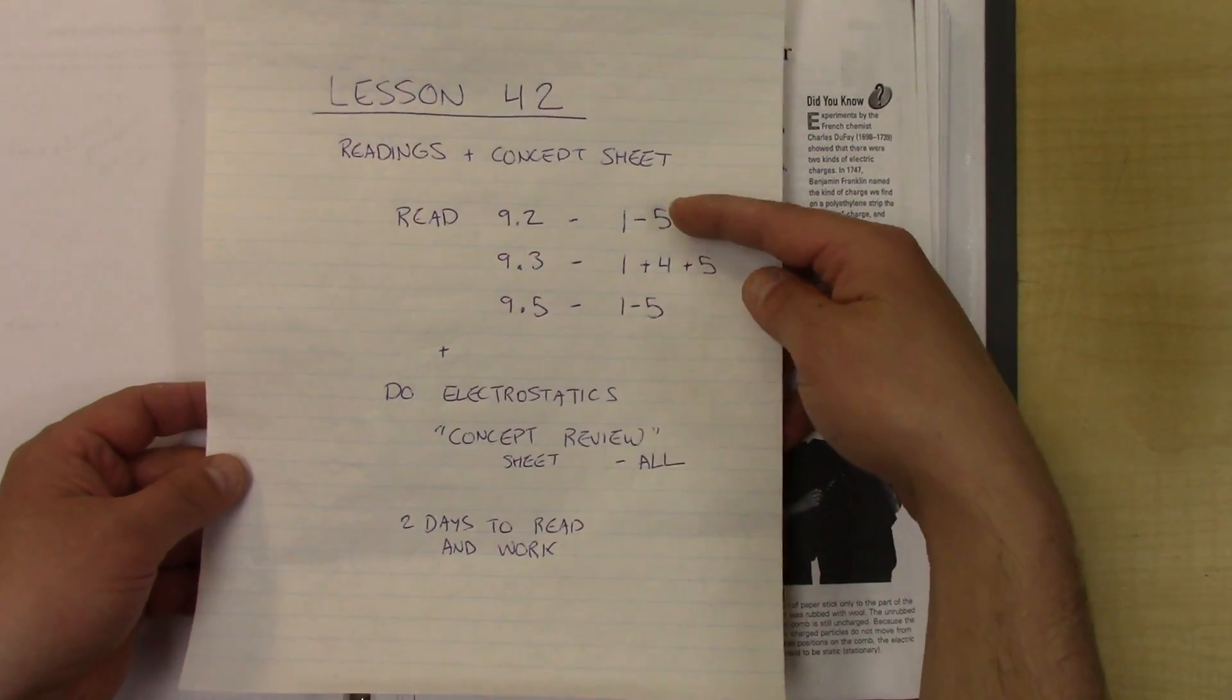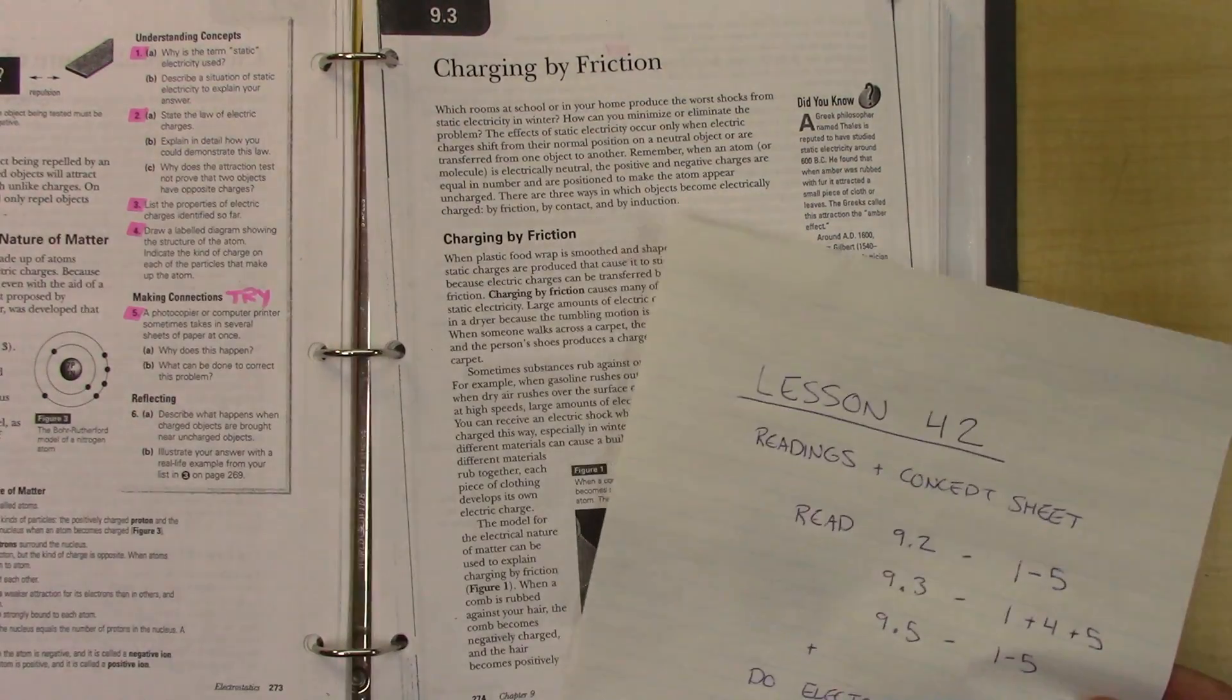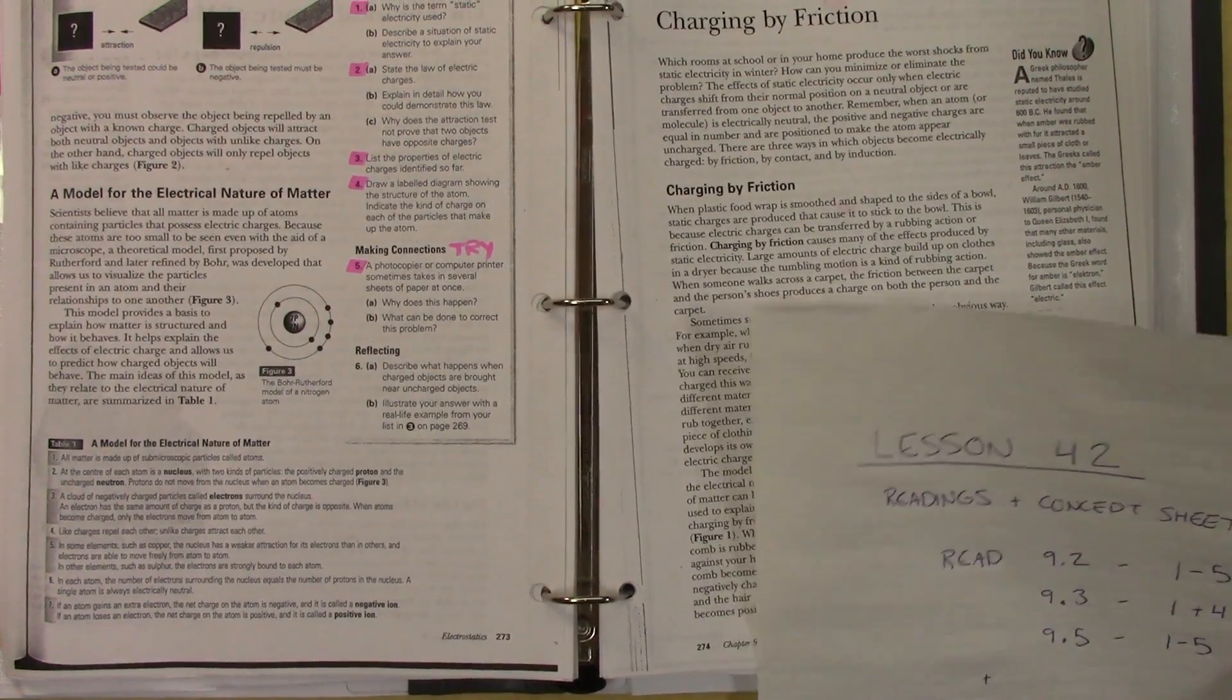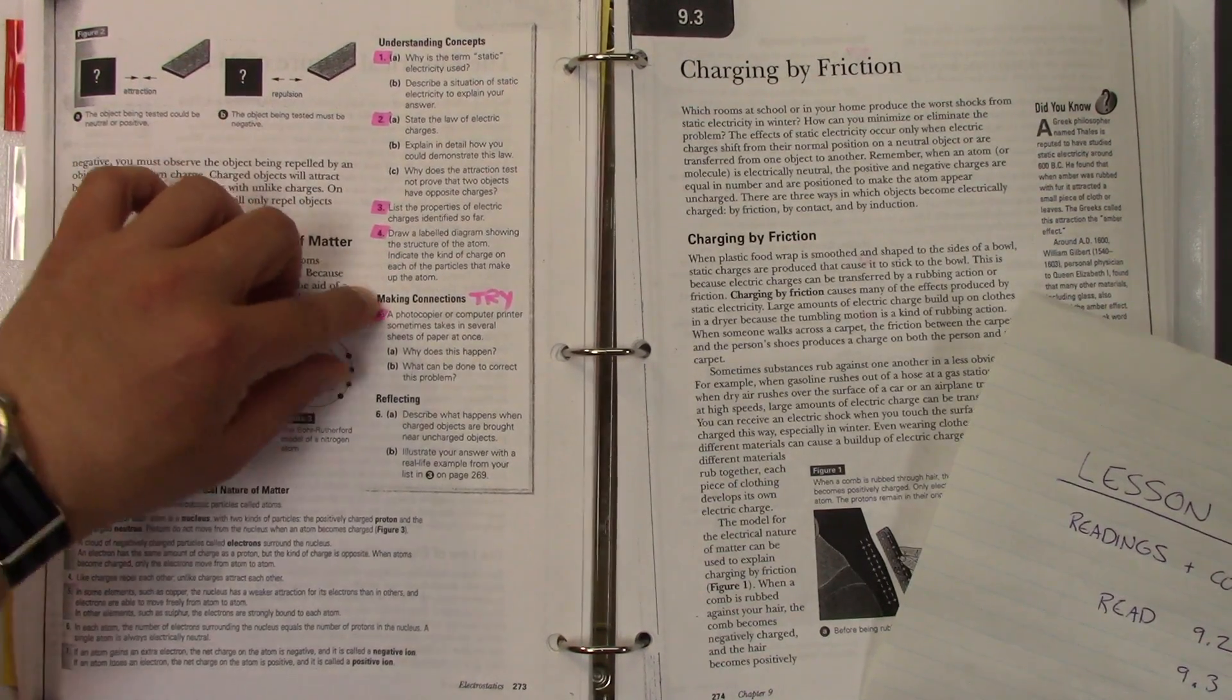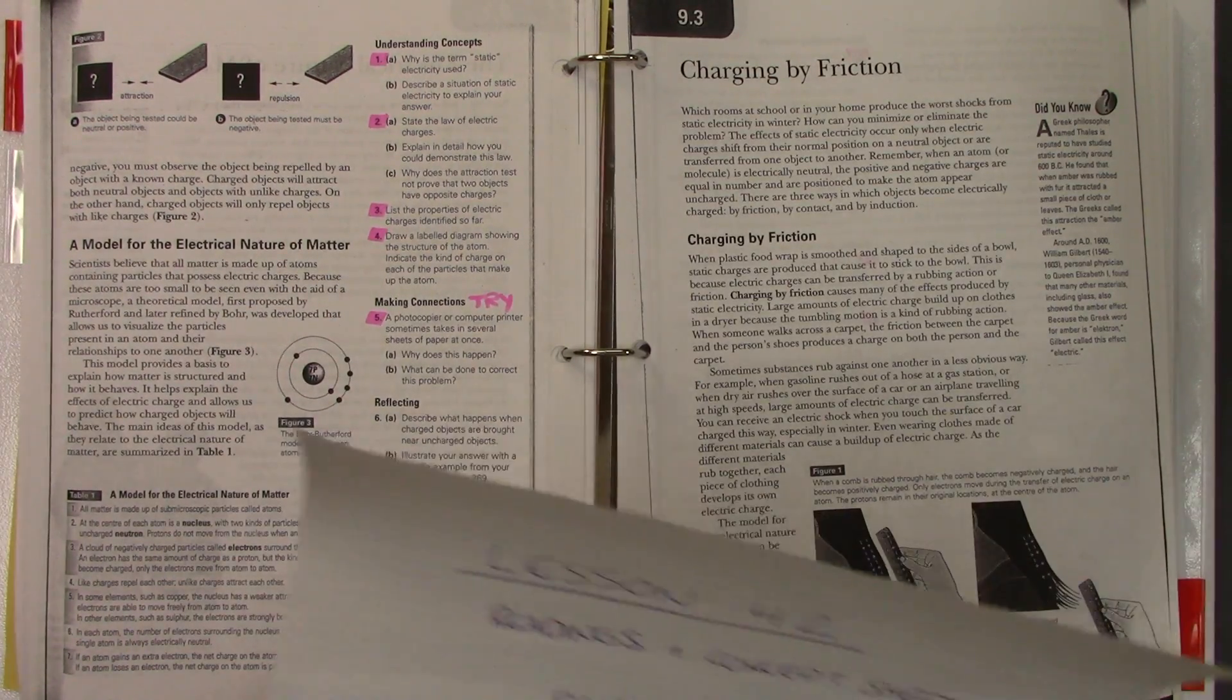So for 9-2, you're going to do 1-5 on the concept review, and I've highlighted it for you right there. So that's what you're doing. You're doing 1-2-3-4 and 5, and try 5, but it might be hard.